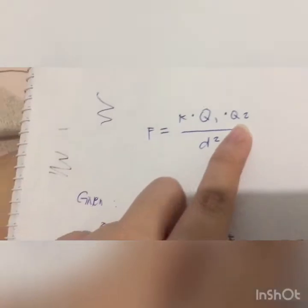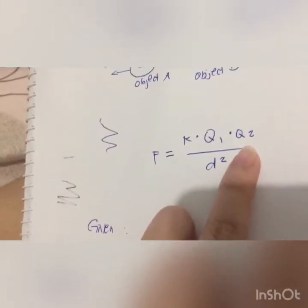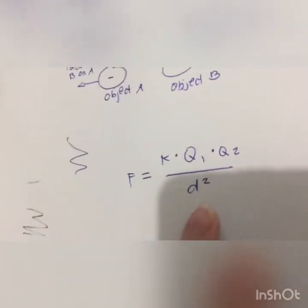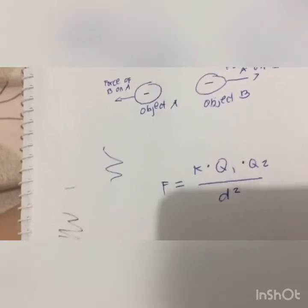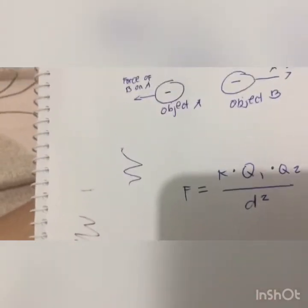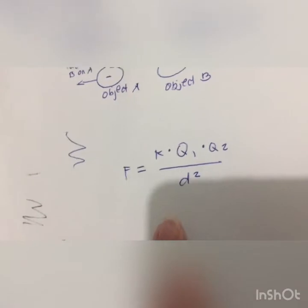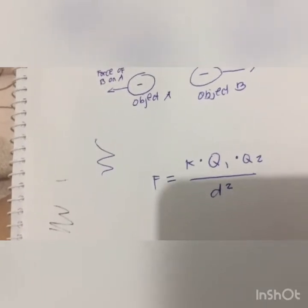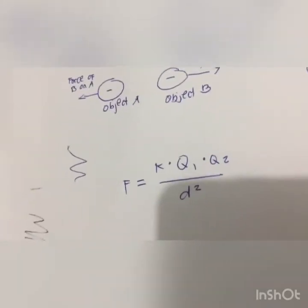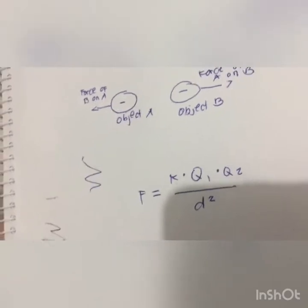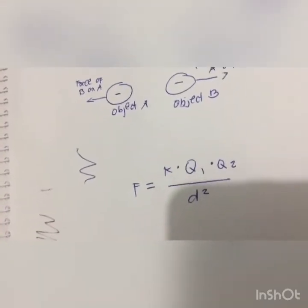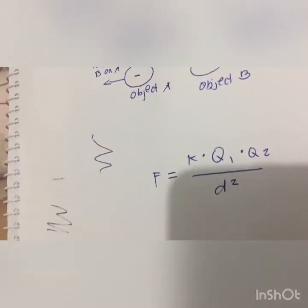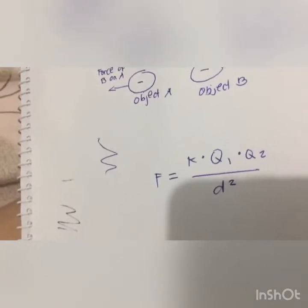The symbols Q1 and Q2 in Coulomb's Law equation represent the quantities of charge on the two interacting objects. Since an object can be charged positively or negatively, these quantities are often expressed as positive or negative values. The sign on the charge represents whether the object has an excess of electrons (negatively charged) or a shortage of electrons (positively charged). It might be tempting to use positive and negative signs in force calculations. When doing so, a negative value of force signifies an attractive force, and a positive value signifies a repulsive force.